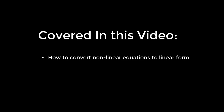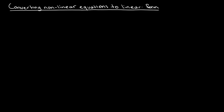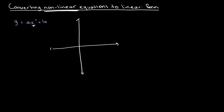In this video I will be teaching you how to convert nonlinear equations into linear form. If we have an equation such as y is equal to ax squared plus B, this is a quadratic equation, so we know that it is not linear. If we were to graph it on the y-axis and x-axis, it would look something like a curve.